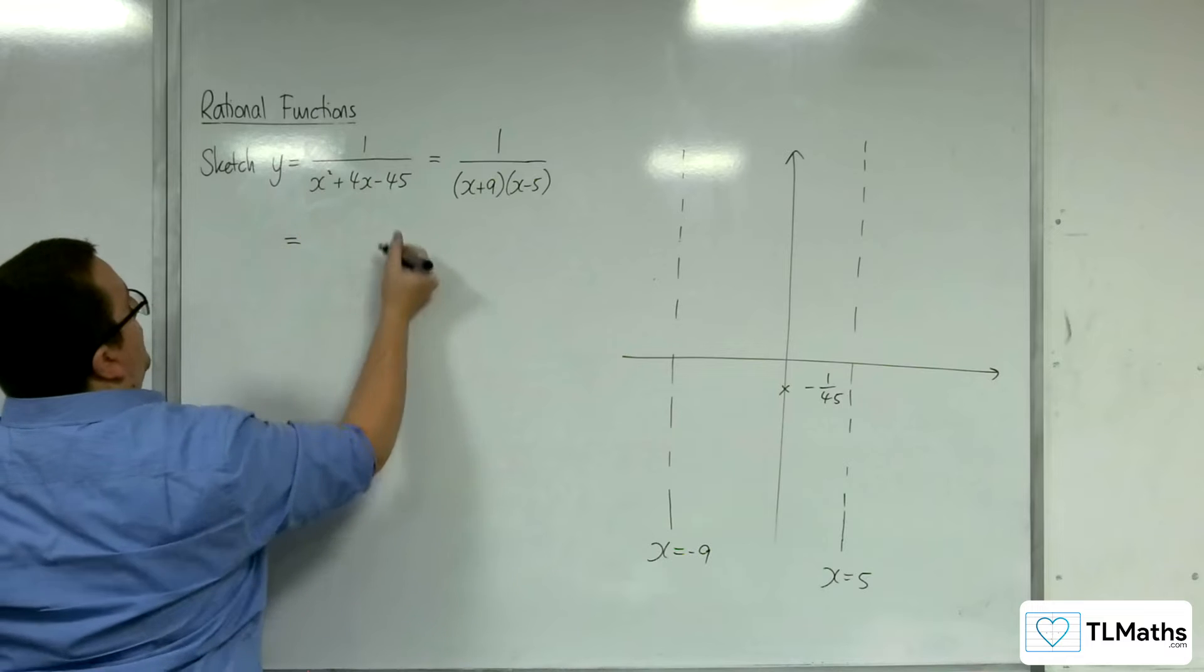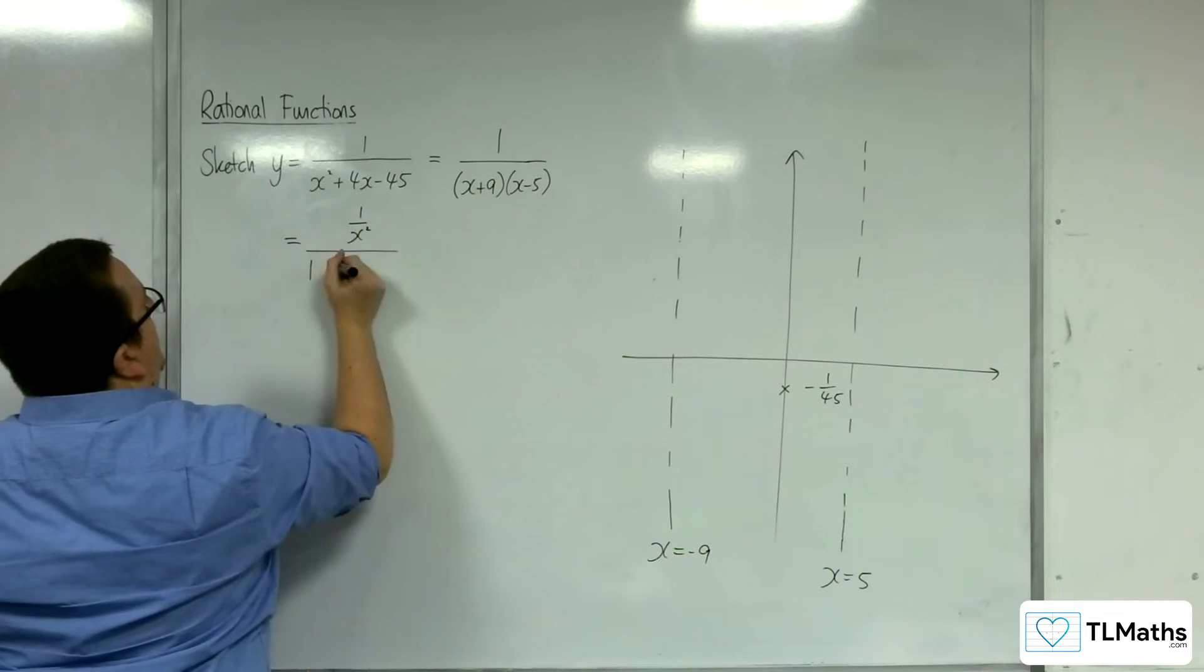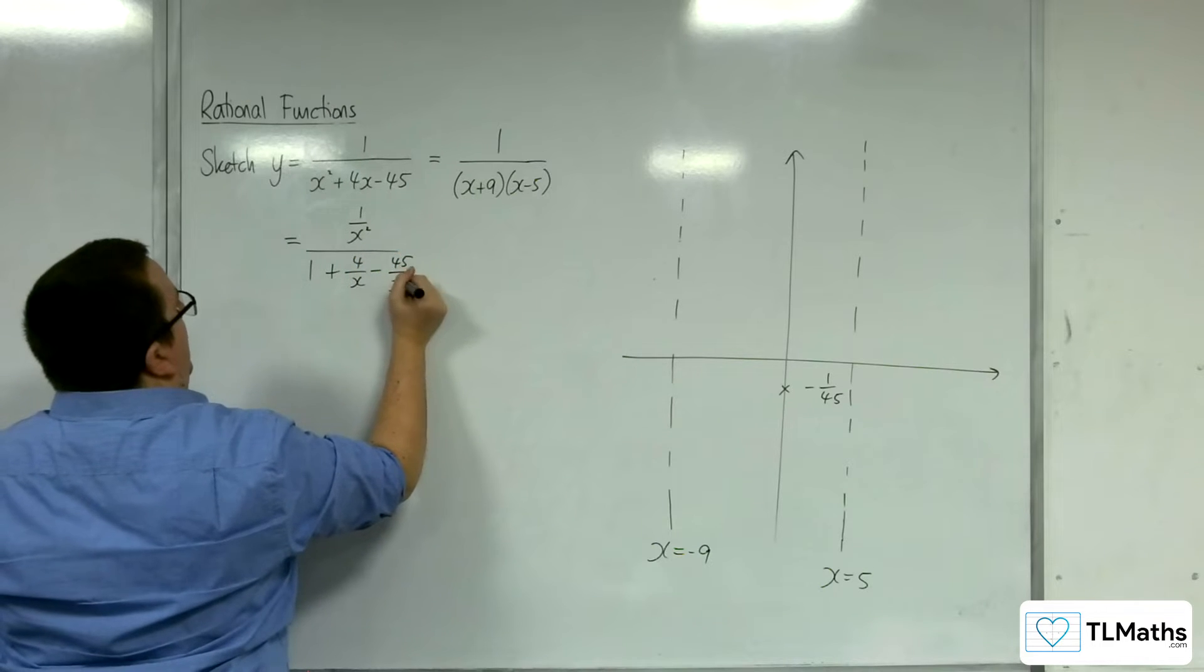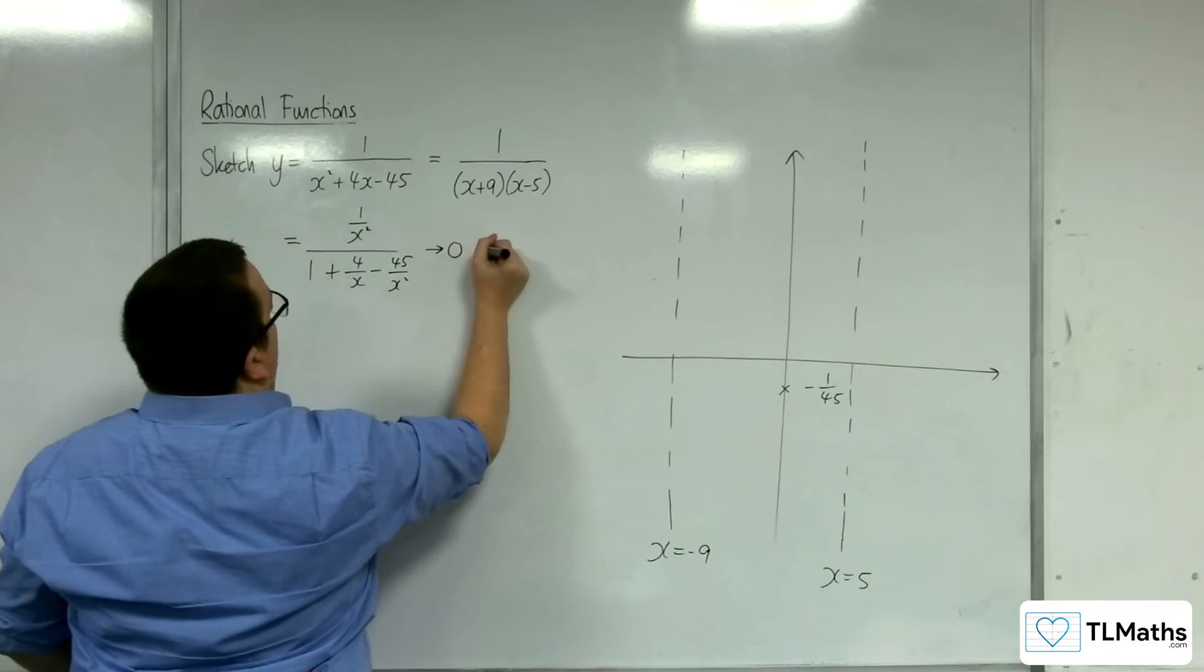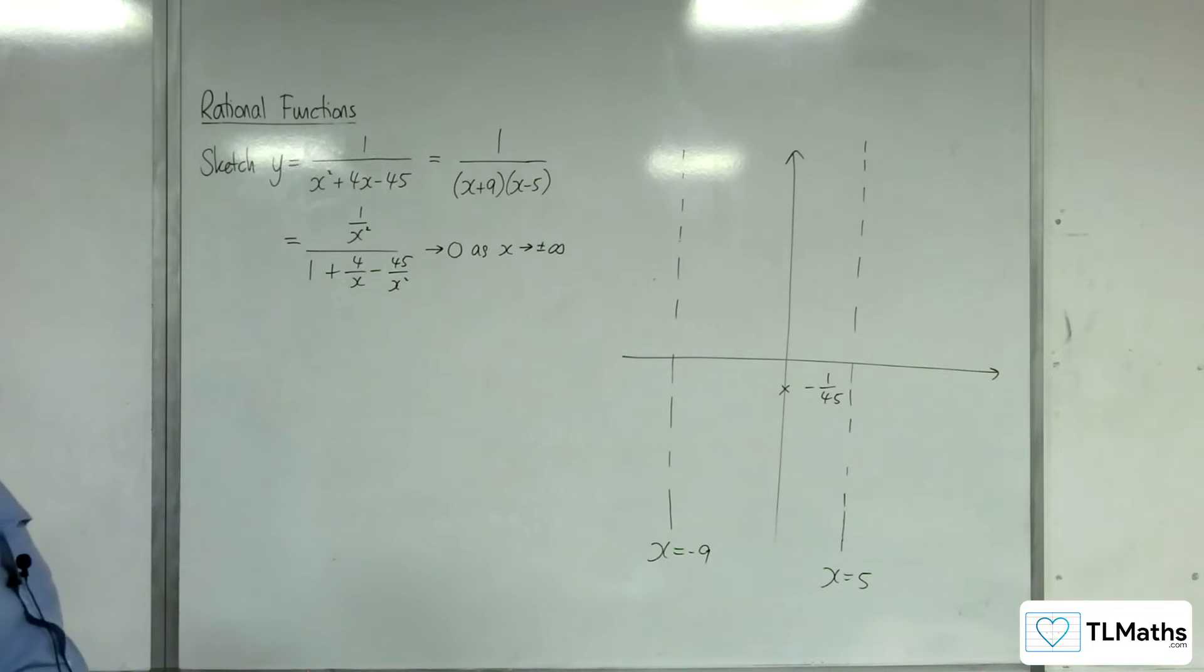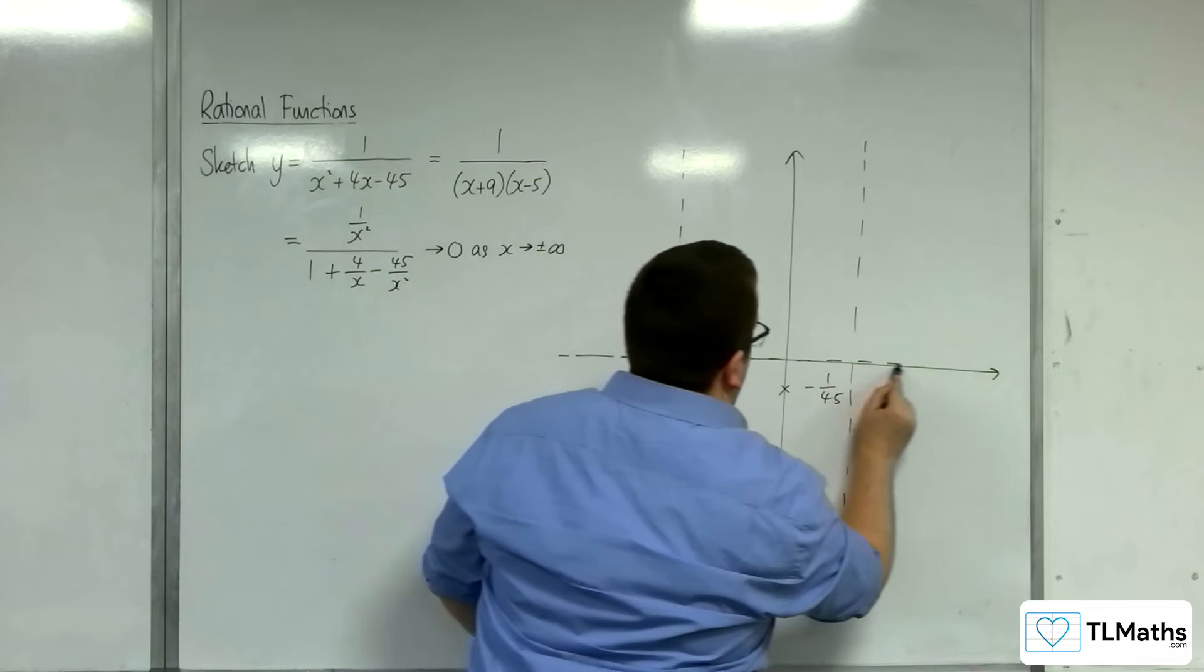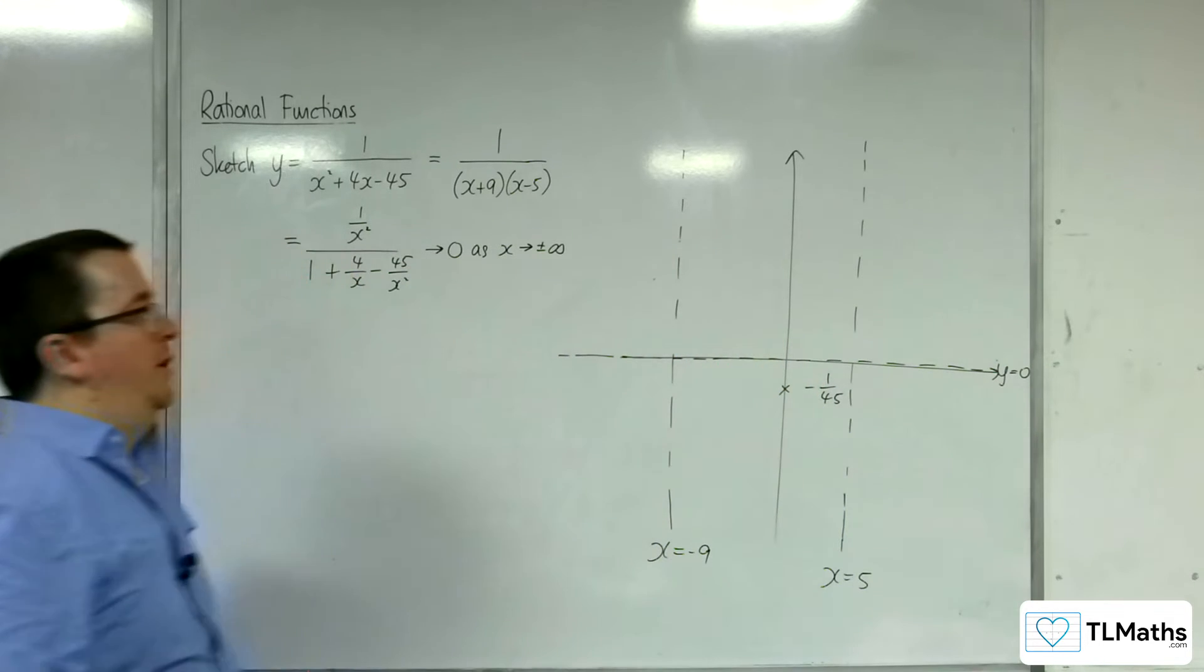You can show that by dividing top and bottom by x squared, if you want to do it this way. And then you can clearly see that once you've got that, that will tend to 0 as x tends to positive or negative infinity. So y equals 0 is a horizontal asymptote.